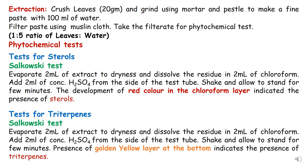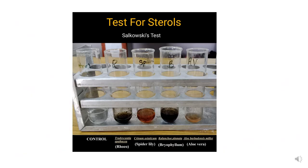In the slide you can see the sterol test performed on different plants. The first test tube is the control — no color, so it is negative. The second tube shows a black color, which is considered negative. The third tube shows a bright red color for spider lily (Crinum asiaticum) — this is a positive result. The fourth tube, Bryophyllum, is negative (black color), and the fifth tube, aloe vera, shows a red color — positive.